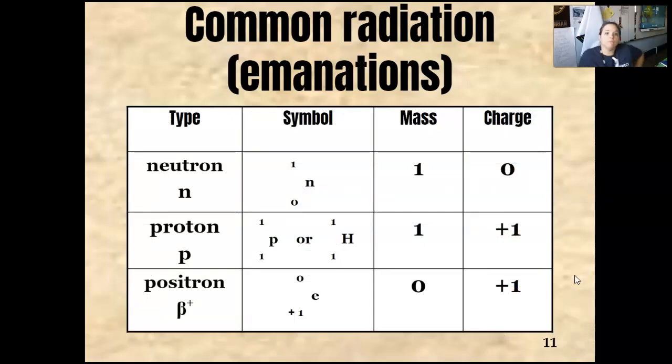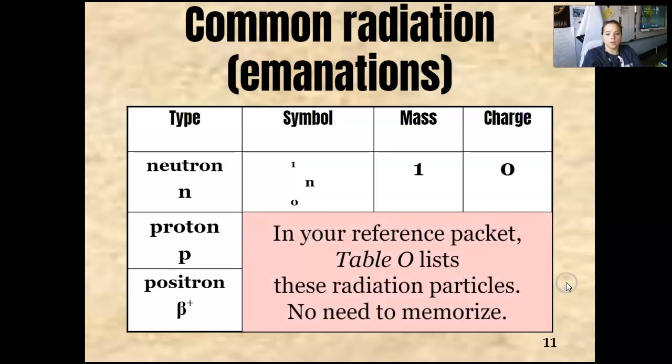Then we have a neutron, symbol is an N. It's got a mass of one, no charge. Got a proton, it's either a P or a hydrogen. Hydrogen has a mass of one, proton has a mass of one. It has a charge of plus one. And then we have a positron. This is a positive electron. I know, weird, right? This is a mass of zero with a charge of plus one. And again, table O right there. These are radiation particles. And you don't need to memorize them. Again, table O.